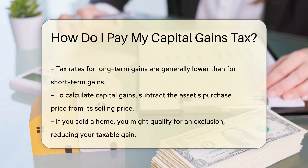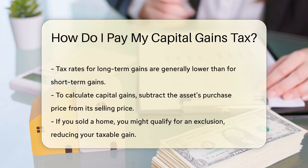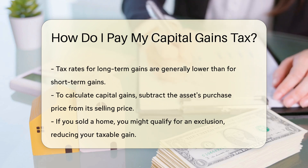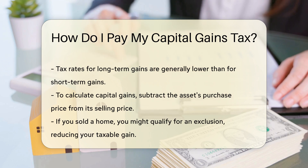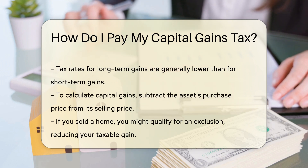To calculate your capital gains, subtract the asset's purchase price from its selling price. This amount is your gain. If you sold a home, you might qualify for an exclusion, reducing your taxable gain. Check if you qualify for deductions or exemptions.